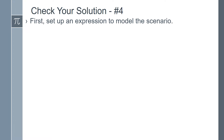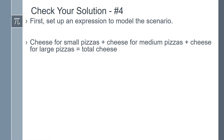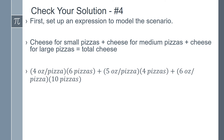The first thing that we need to do is set up an expression to model the scenario. We can help ourselves by breaking it into pieces. If we find all of the cheese for the small pizzas, plus all of the cheese for the medium pizzas, plus all of the cheese for the large pizzas, we can find the total amount of cheese. The expression would look like this: 4 ounces of cheese per small pizza times 6 small pizzas, plus 5 ounces of cheese per medium pizza times 4 medium pizzas, plus 6 ounces of cheese per large pizza times 10 large pizzas, and that will give us the total amount of cheese. Now we're ready to get to work.